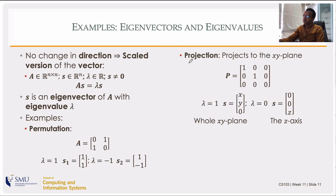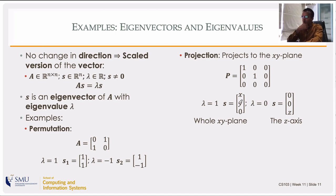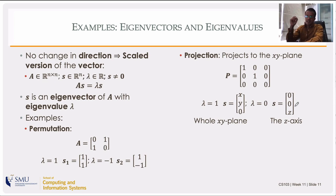For the projection matrix projecting to the XY plane — a 3×3 diagonal matrix — any vector [x, y, 0] won't change, so all vectors on the XY plane are eigenvectors with eigenvalue 1. Any vector along the Z-axis gets mapped to the zero vector, so those are eigenvectors with eigenvalue 0. Eigenvalues are allowed to be 0, but eigenvectors are not allowed to be the zero vector.